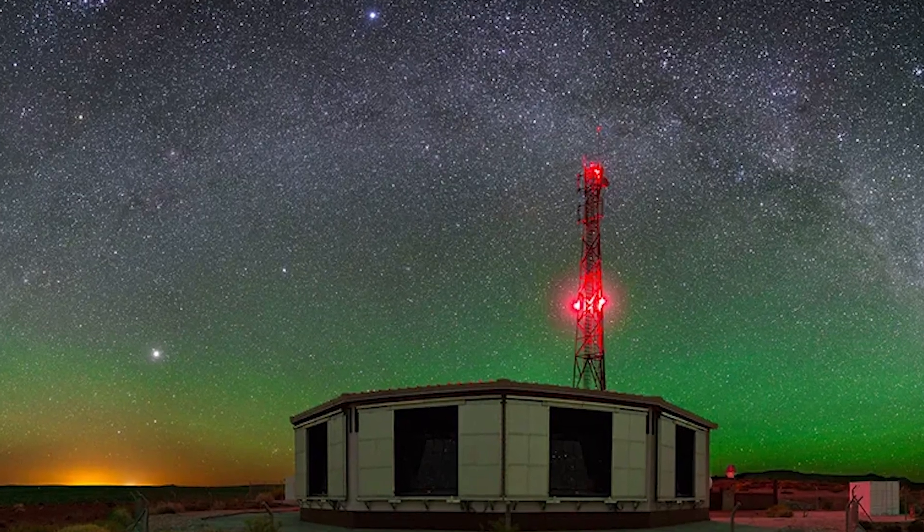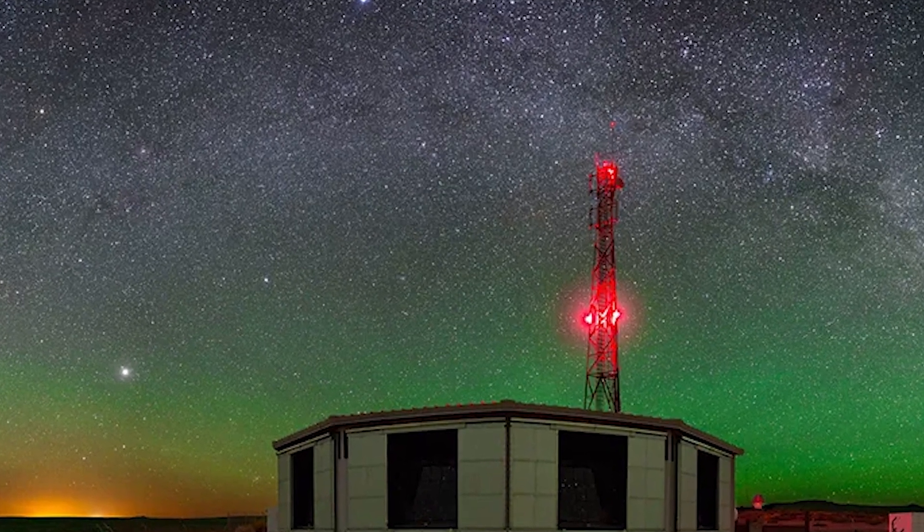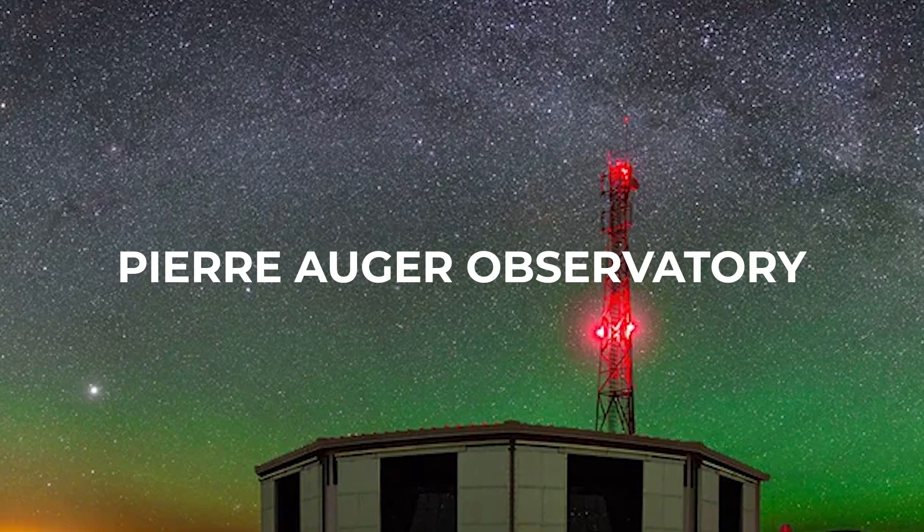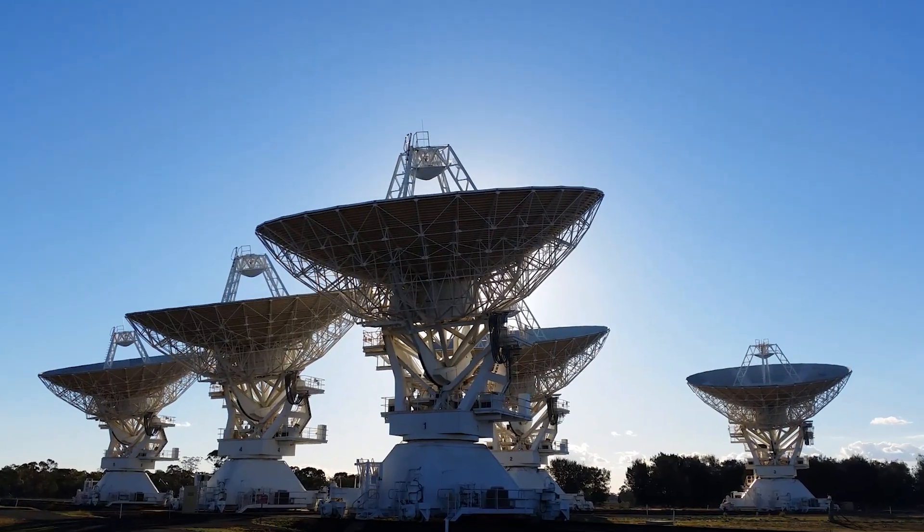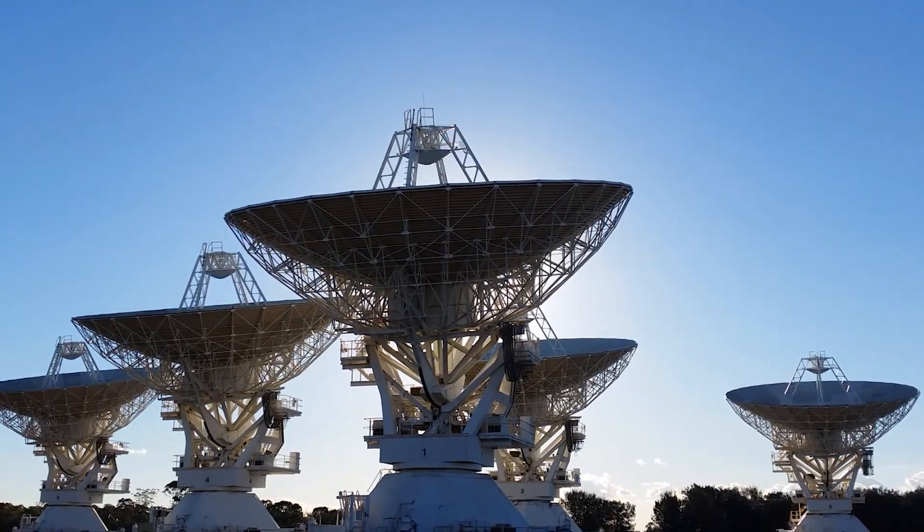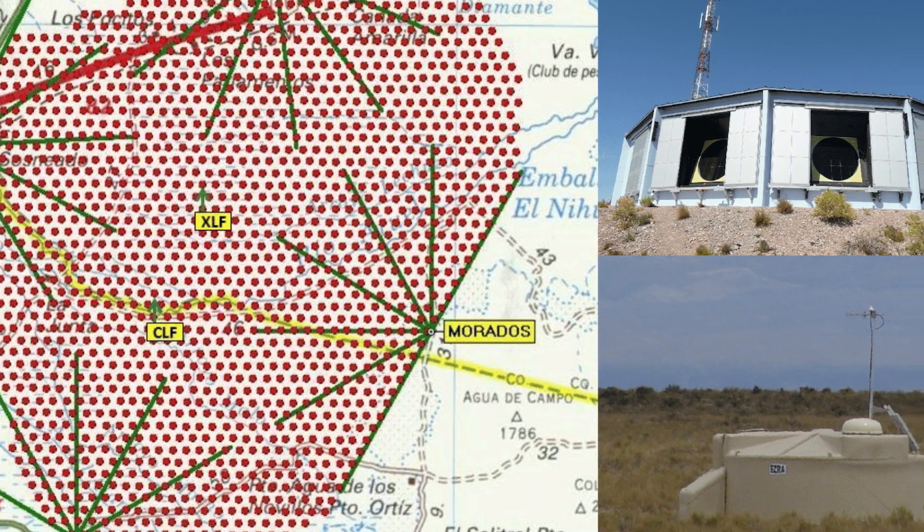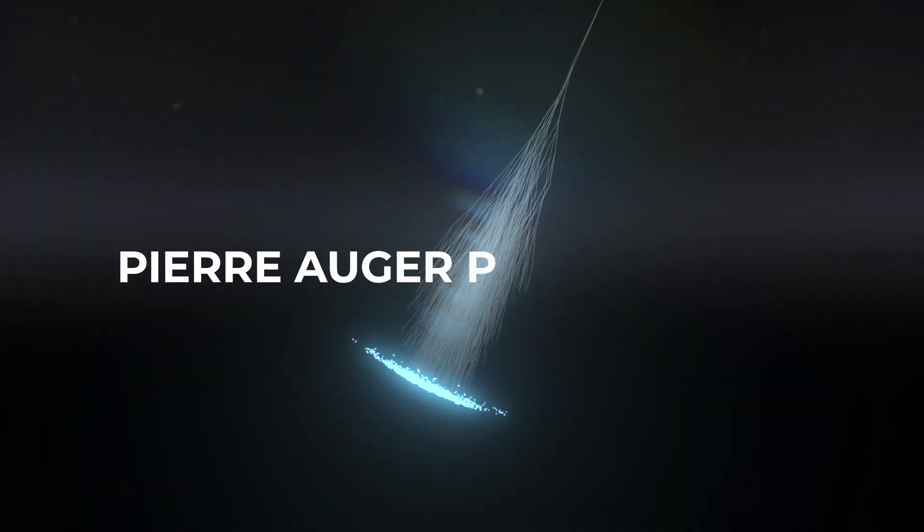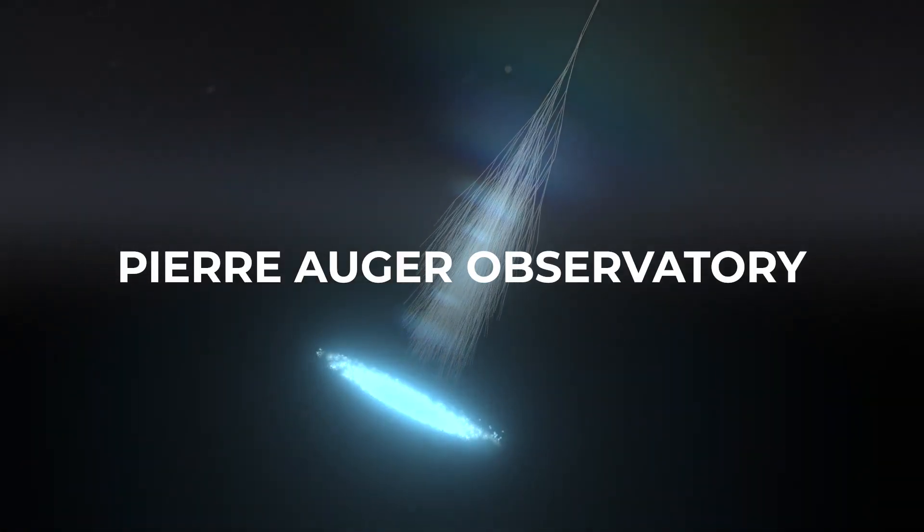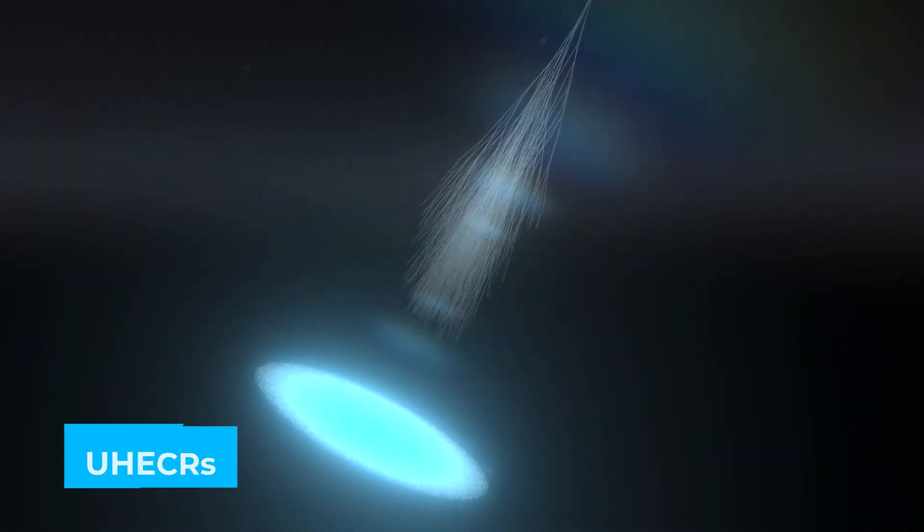Another significant player in cosmic rays observation is the Pierre Auger Observatory in Argentina. It is the world's largest cosmic ray observatory, covering 3,000 square kilometers. With an extensive array of detectors, the Pierre Auger Observatory aims to unravel the mysteries surrounding UHECRs.